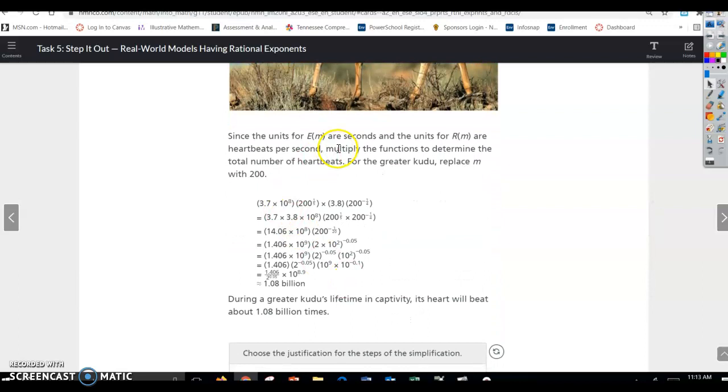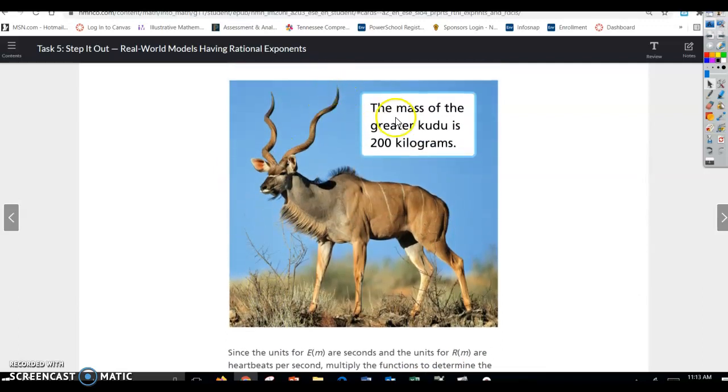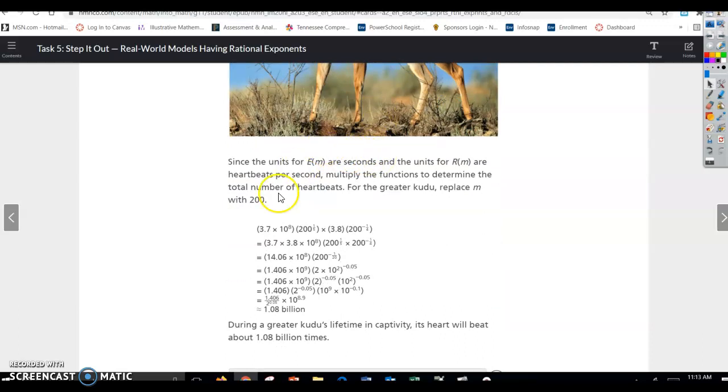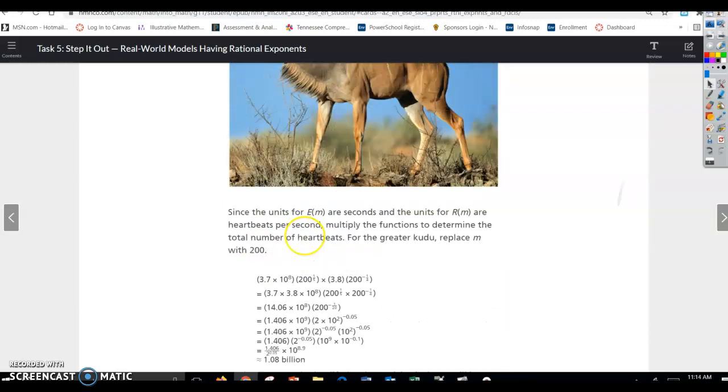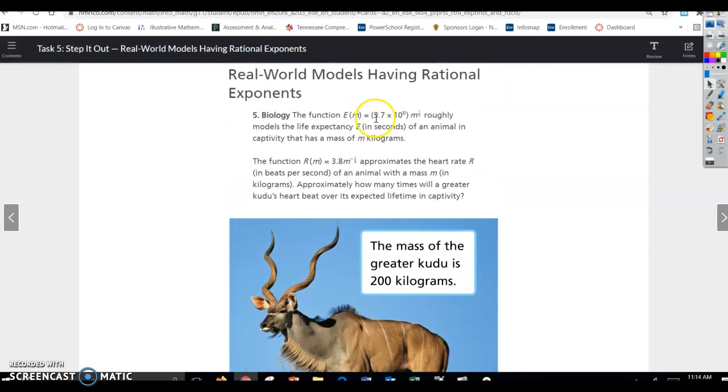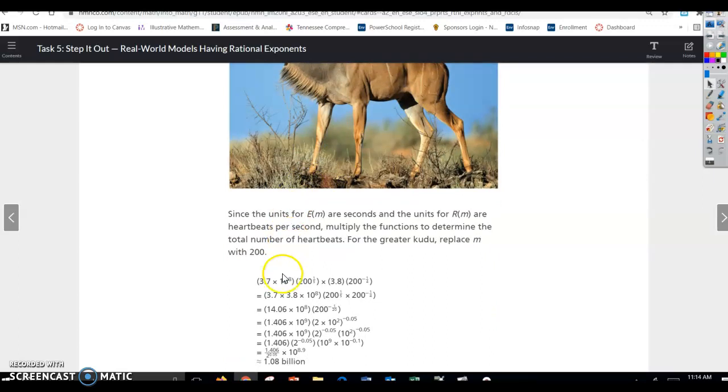Since the units for E of m are seconds and the units for r of m are heartbeats per second, multiply the functions to determine the total number of heart beats. For the greater kudu, replace m with 200. Remember m is mass, and the mass of the kudu they gave us in the picture is 200 kilograms.